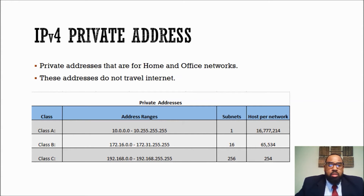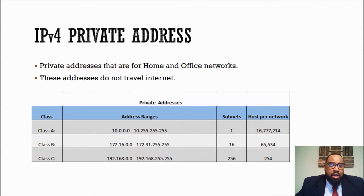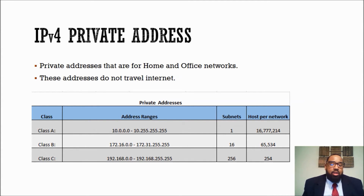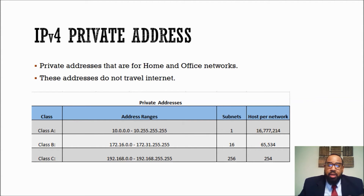Most small organizations will use the class C. They may subnet a class A 10 network down to a class C, but many times in the office environment you don't want to make your networks larger than a class C, because that broadcast domain gets so large that it limits your communication across your network. You want to keep your subnets below that class C range.